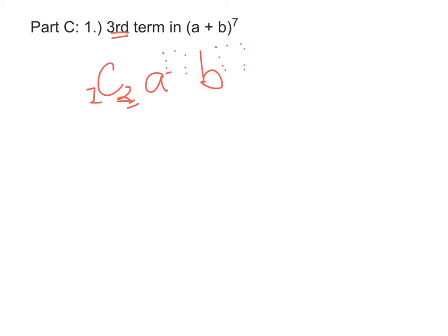So this second number will always be 1 less than the term that we're looking for. But once we know that number, that's going to be the same as the second power. And the two powers need to add up to that overall power of 7. So a to the fifth, and b to the second.